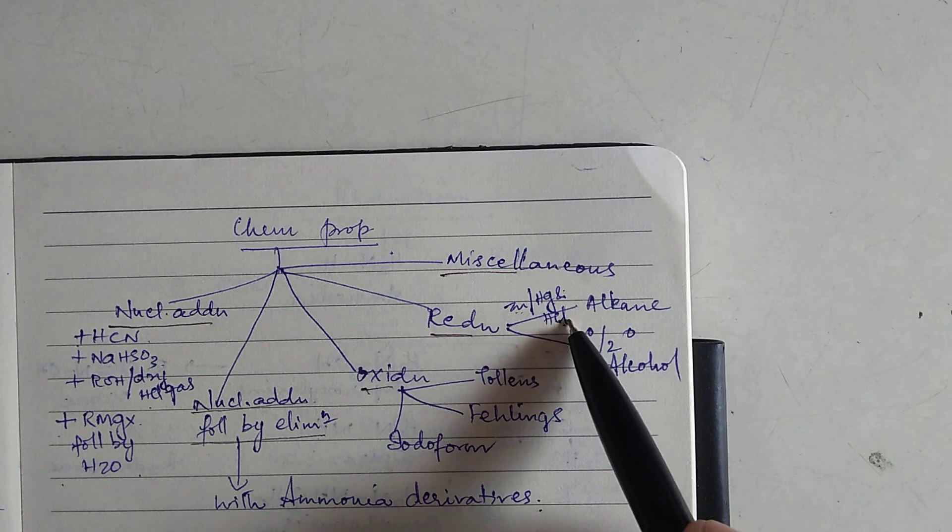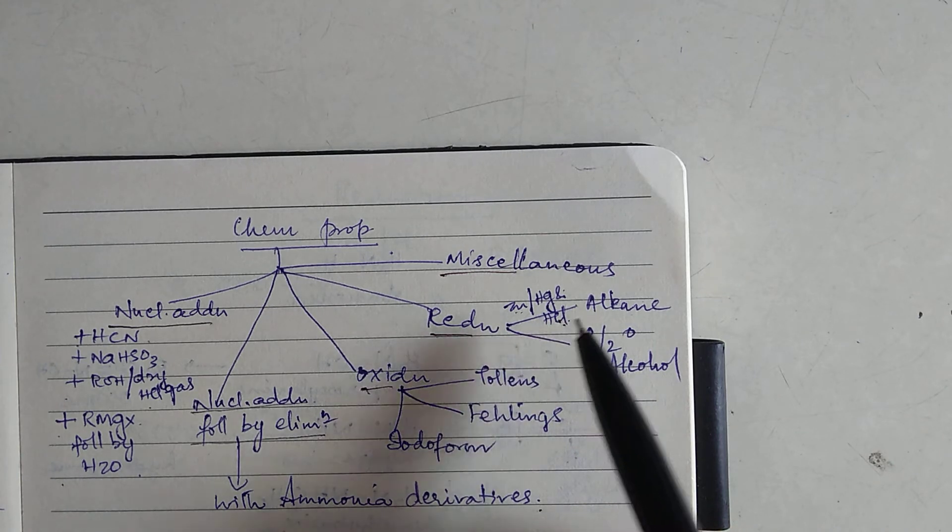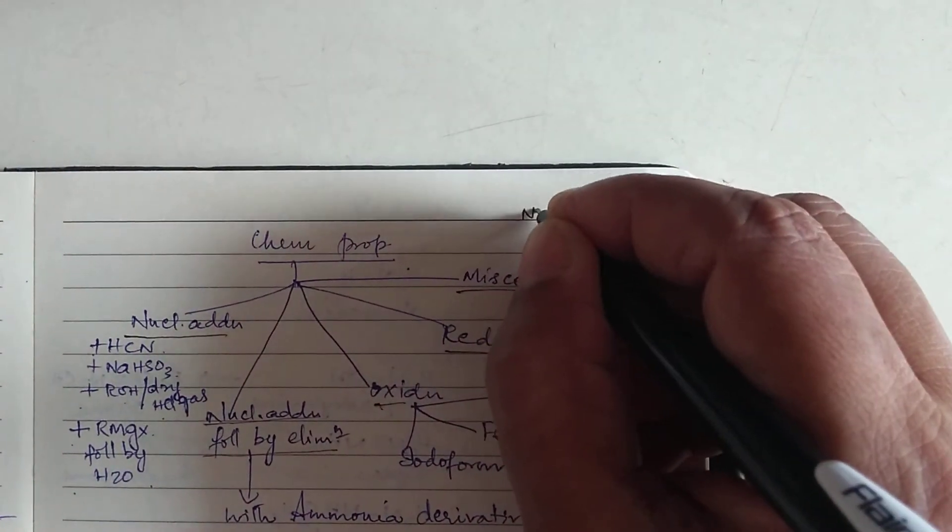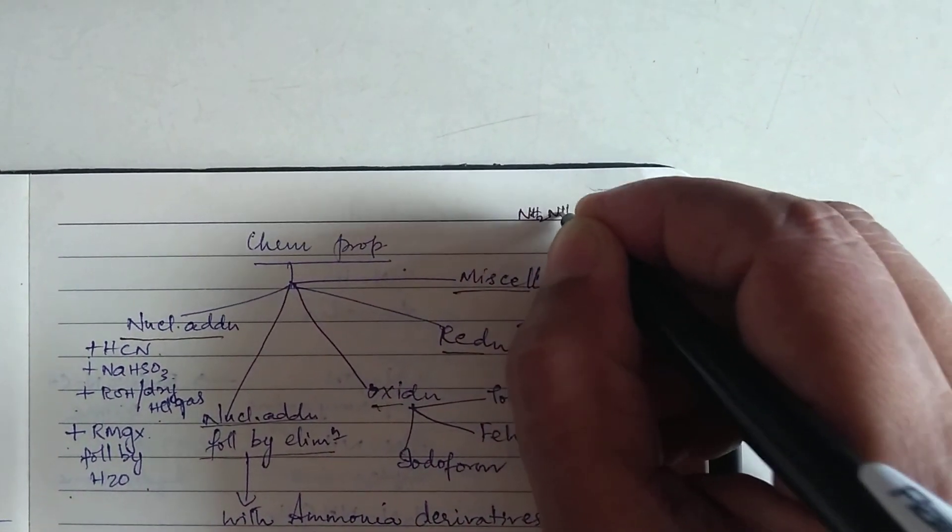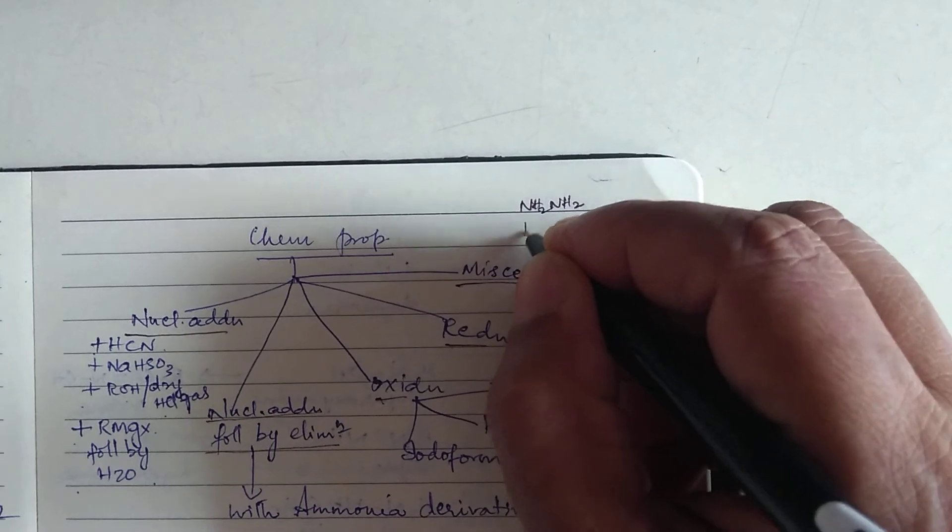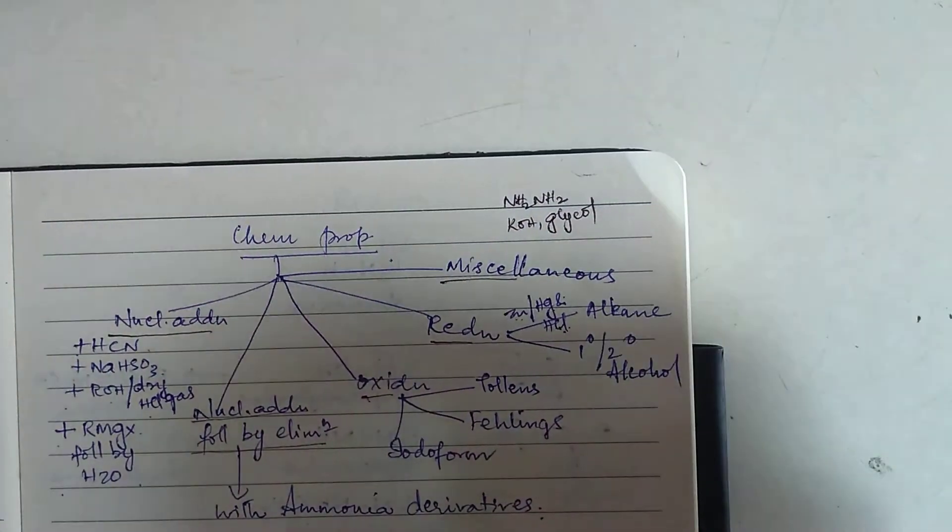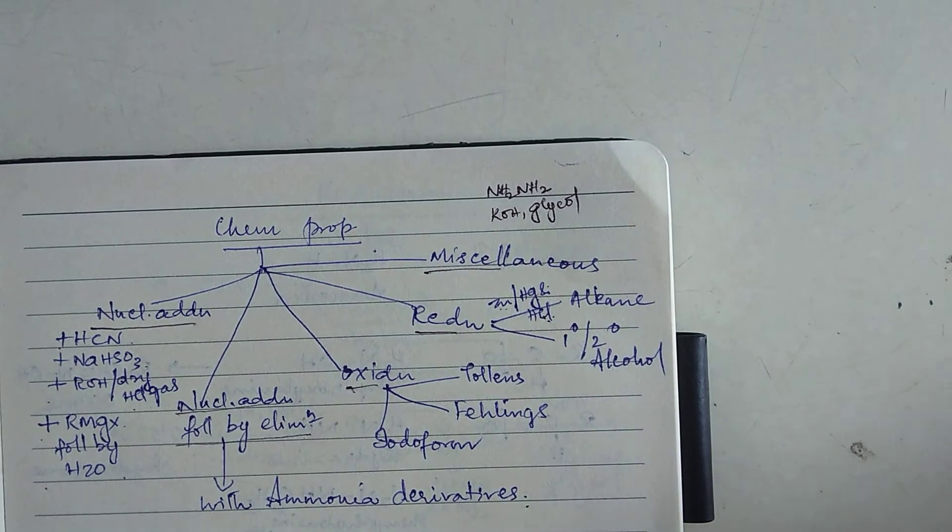Now, there is one more reduction process which is called as Wolf-Kishner reduction which is taking place in the presence of hydrazine followed by KOH and glycol. This is called as Wolf-Kishner reduction.